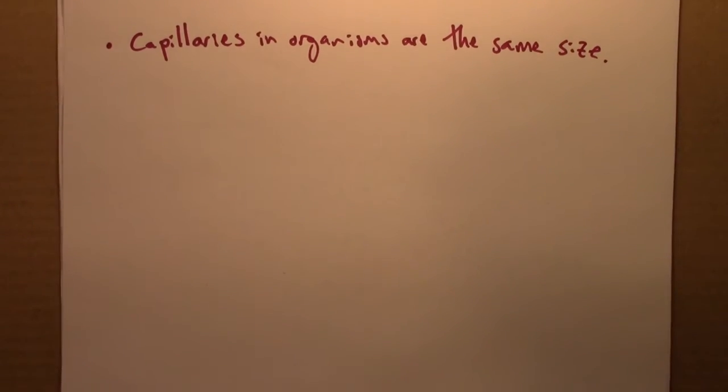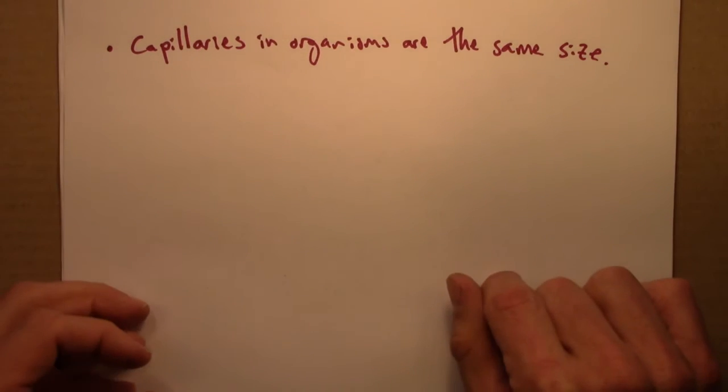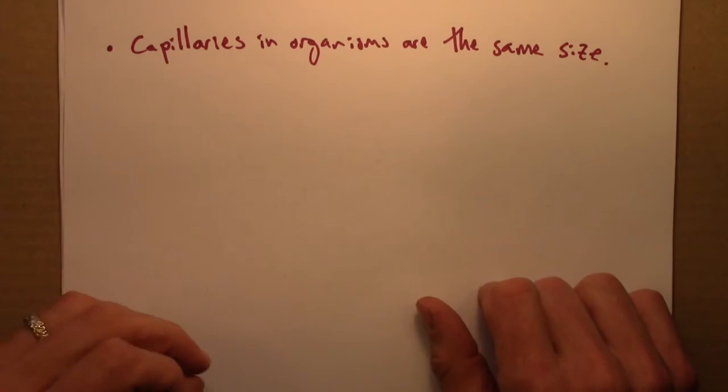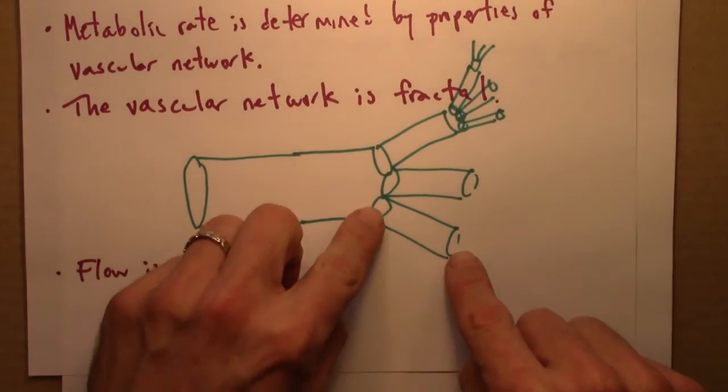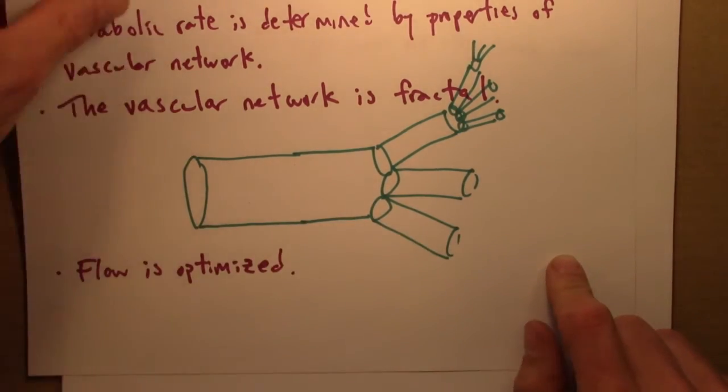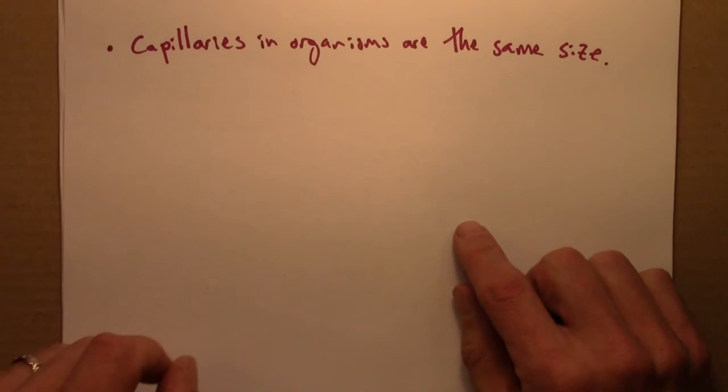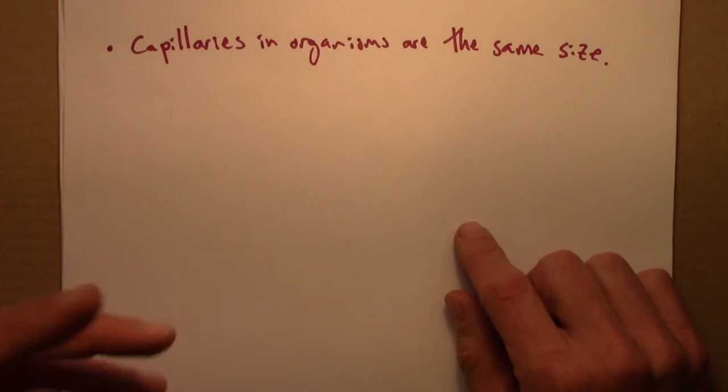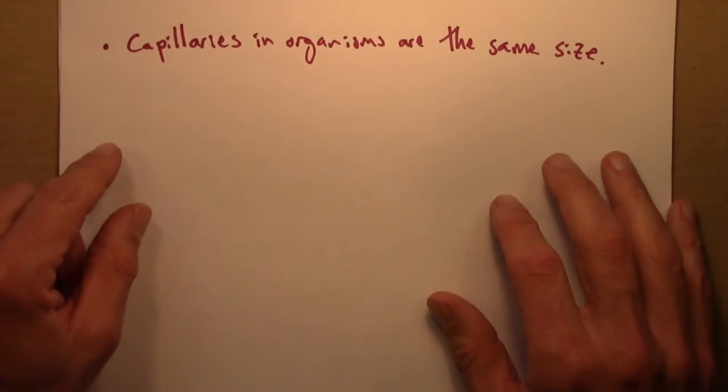So, for example, an elephant has a bigger heart than me, it has a bigger aorta. It would have more levels in the network, more branching, call this level 0, level 1, level 2, and so on. But my capillaries and the elephant's capillaries are the same size.